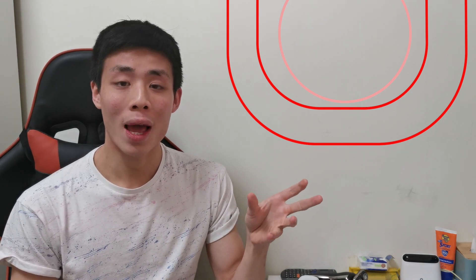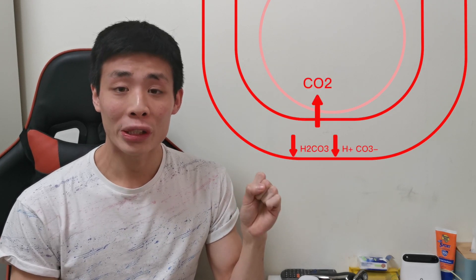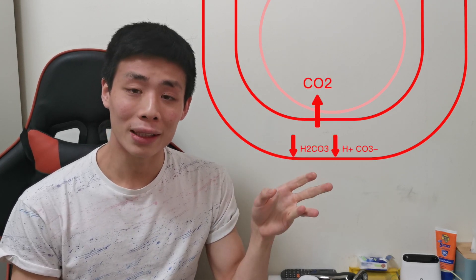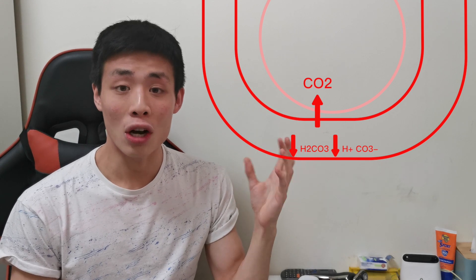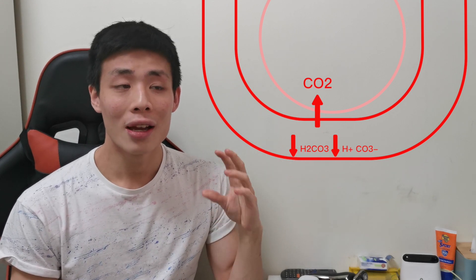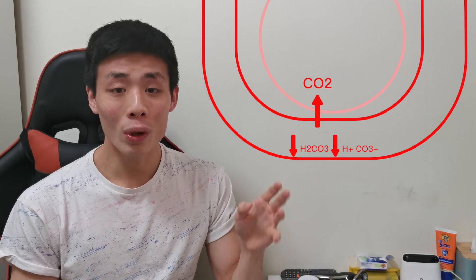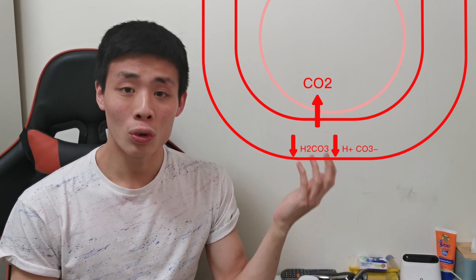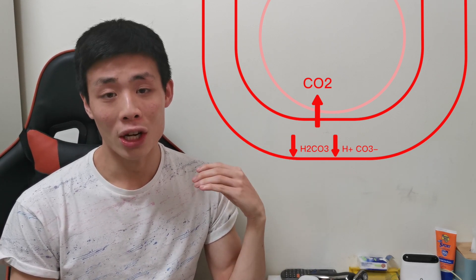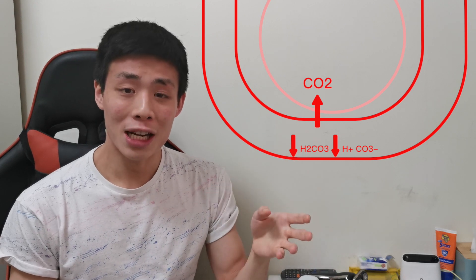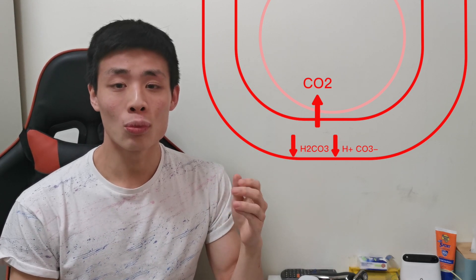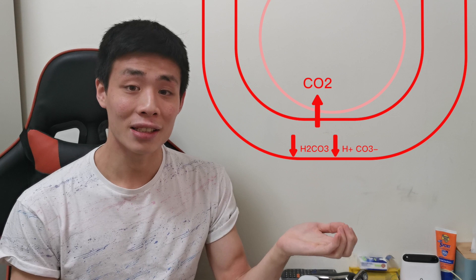This is a diagram of an alveolus, which is the smallest compartment inside the lungs where gaseous exchange takes place. When there is hyperventilation, carbon dioxide is being removed very quickly from the blood surrounding these alveoli, causing the concentration of CO₂ to drop inside the blood. When this happens, more carbonic acid is converted to form more carbon dioxide and water, and more free hydrogen ions and bicarbonate ions are converted into carbonic acid.